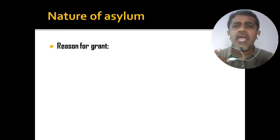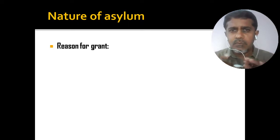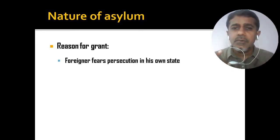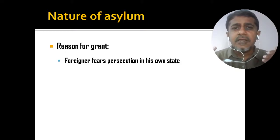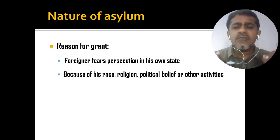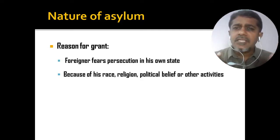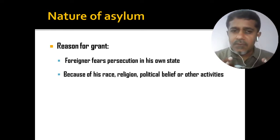Regarding the nature of asylum, why does one state give sanctuary to a national of another state? A common reason is to treat him as a refugee and give him protection. A foreigner fears persecution in his own state — he is being targeted, victimized, and facing intimidation — because of his race, religion, political beliefs, or other activities. Those other activities, which are political in nature, will be discussed when we examine different kinds of asylums.